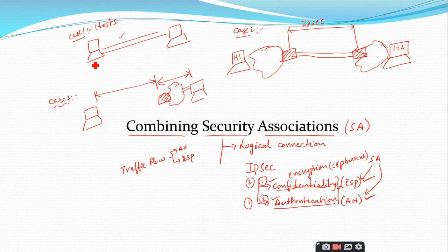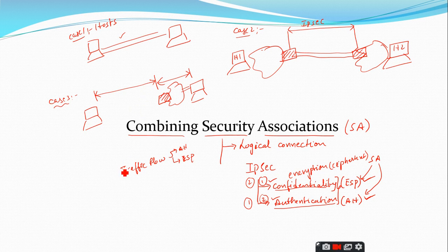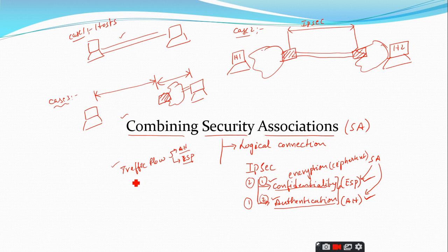In situations where traffic flow requires both Authentication Header and ESP, we combine these two things. That is the reason why the title is 'Combining Security Association.' One type of traffic flow in real life requires both AH and ESP, and the combination of AH and ESP is termed as a Security Association Bundle.